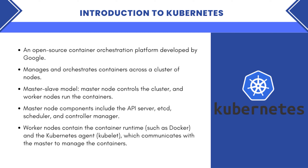The worker nodes run the containers and execute the workloads. Kubernetes also provides a declarative approach to managing infrastructure where you specify the desired state of the application and Kubernetes takes care of making it happen. The master node components include API server, etcd, scheduler, and controller manager. The worker nodes contain a container runtime such as Docker or Podman, and the Kubernetes agent known as Kubelet, which is responsible for communication between master and worker nodes.